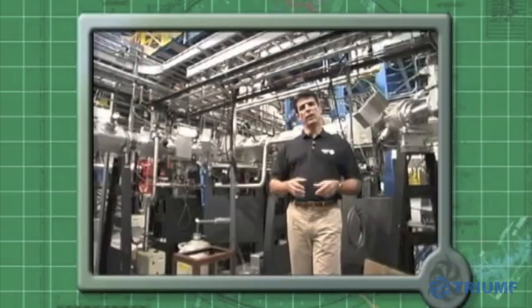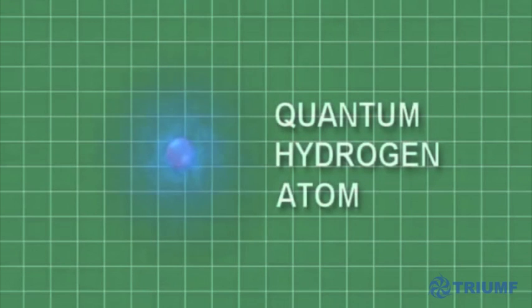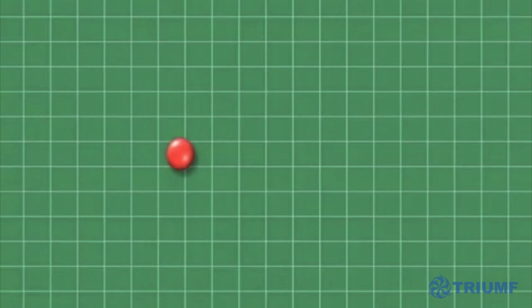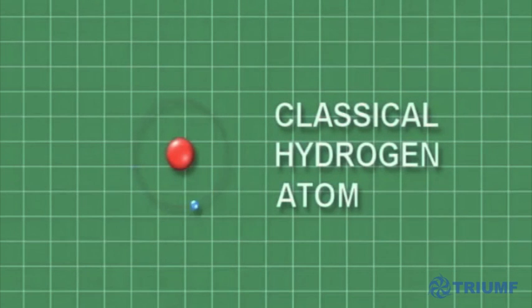To start, we need a model of the hydrogen atom. We know from quantum mechanics that atoms have electrons residing in clouds with no fixed orbits. However, to help us understand the essential concepts, let's use the classical model of a proton orbited by a single electron at a fixed radius.